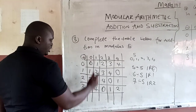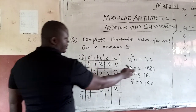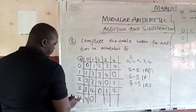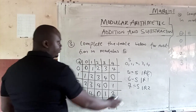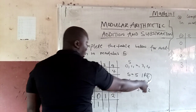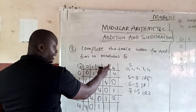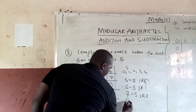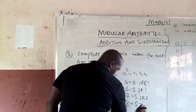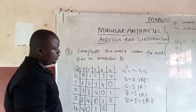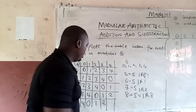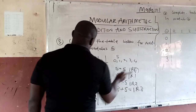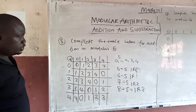4 plus 0 will give you 4. 4 plus 1 is 5. We do 5 divided by 5, which is 1 remainder 0, so we put 0. 4 plus 2 is 6. 6 divided by 5 gives 1 remainder 1, so you put 1. 4 plus 3 is 7, we already solved that, so you take 2. 4 plus 4 is 8. 8 divided by 5 gives 1 remainder 3, so what we are going to put is 3. Note that the range is 0, 1, 2, 3, 4 and the highest value is 4, so we are on the right track.